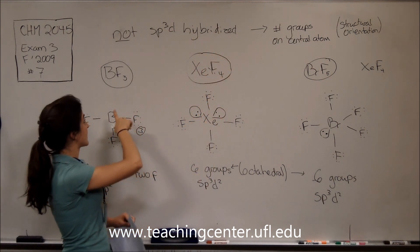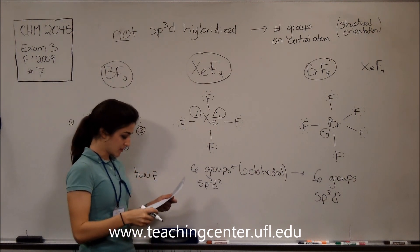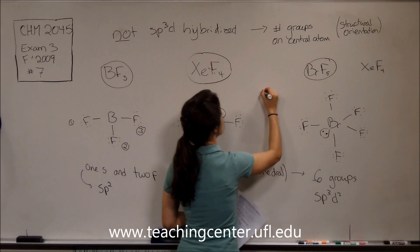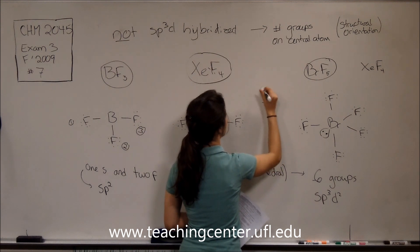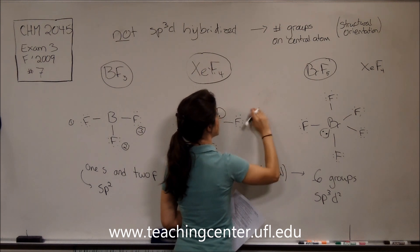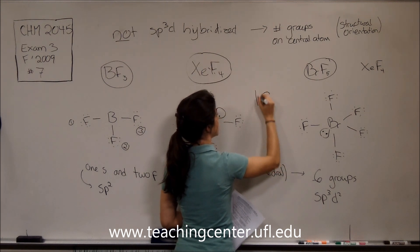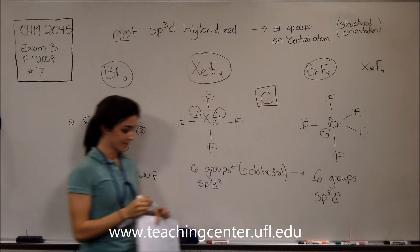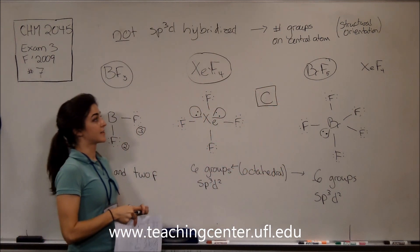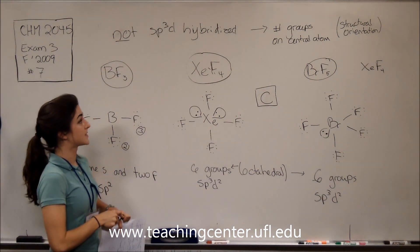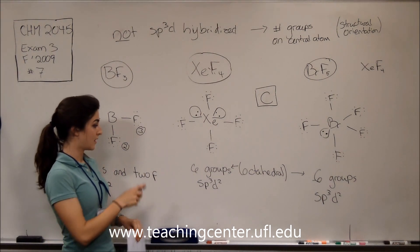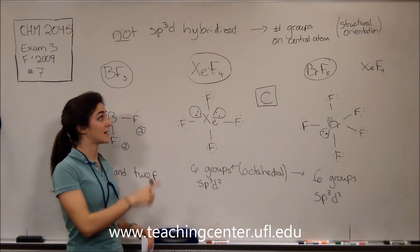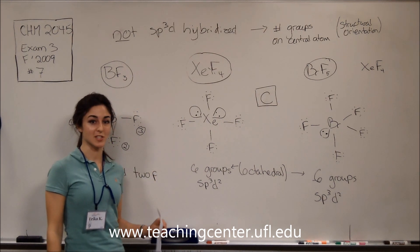The answer that includes all three of these molecules — BF₃, BrF₅, and XeF₄ — is answer choice C. The key takeaway from this problem is knowing how to identify hybridization from the structural orientation by counting the number of groups on the central atom.